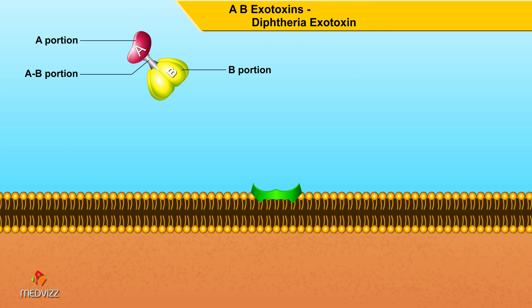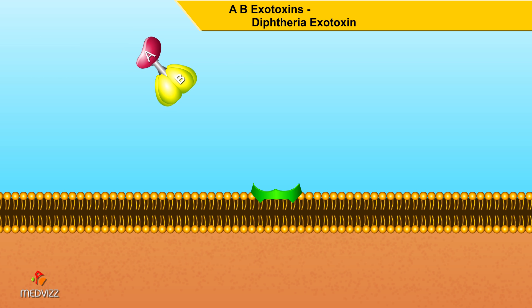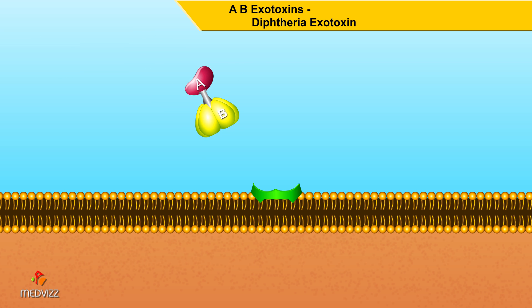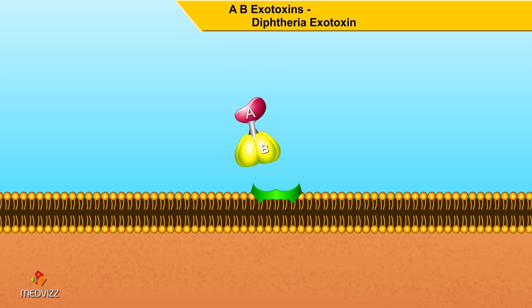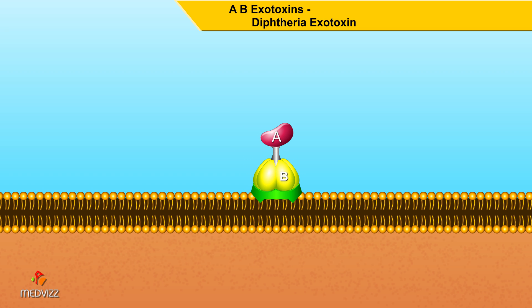AB toxins are proteins that consist of two parts, A and B. The A portion is an enzyme that constitutes the toxic part. The B portion binds to host cell receptors.